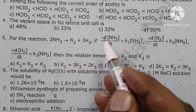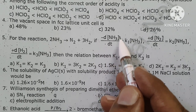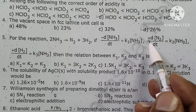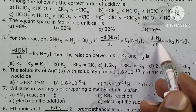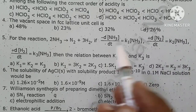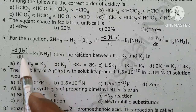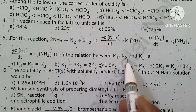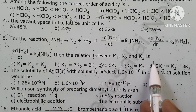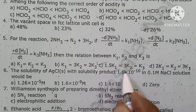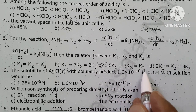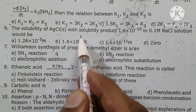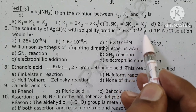For the reaction where ammonia gives N2 and H2: if minus d[NH3]/dt = K1·[NH3], d[N2]/dt = K2·[NH3], and d[H2]/dt = K3·[NH3], then the relation between K1, K2, and K3 is: K1 = 1.5, K2 = 3, and K3 is related accordingly.